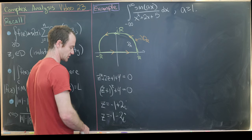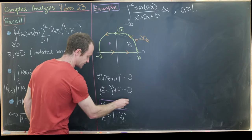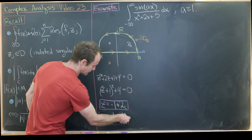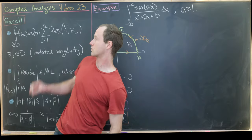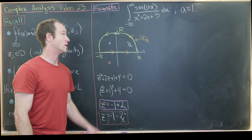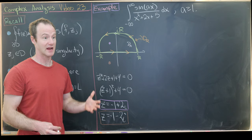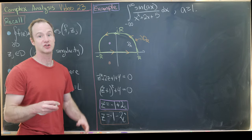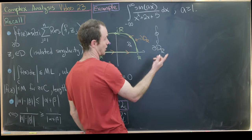The pole at −1 + 2i is inside our region D_R (in the upper half plane), while −1 − 2i is below the real axis and outside D_R, so we only need the first. Now instead of integrating with sin(az), we'll use a complex exponential e^(iaz) and extract the imaginary part at the end using Euler's formula. This is a little easier to work with than the trigonometric function directly.